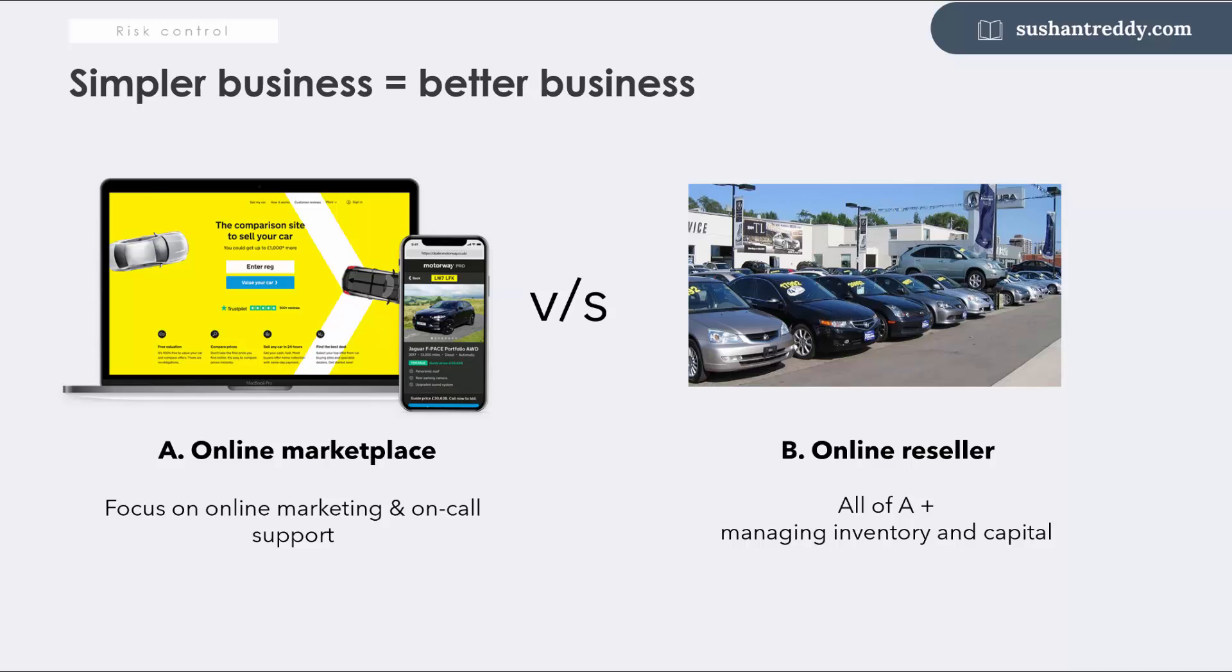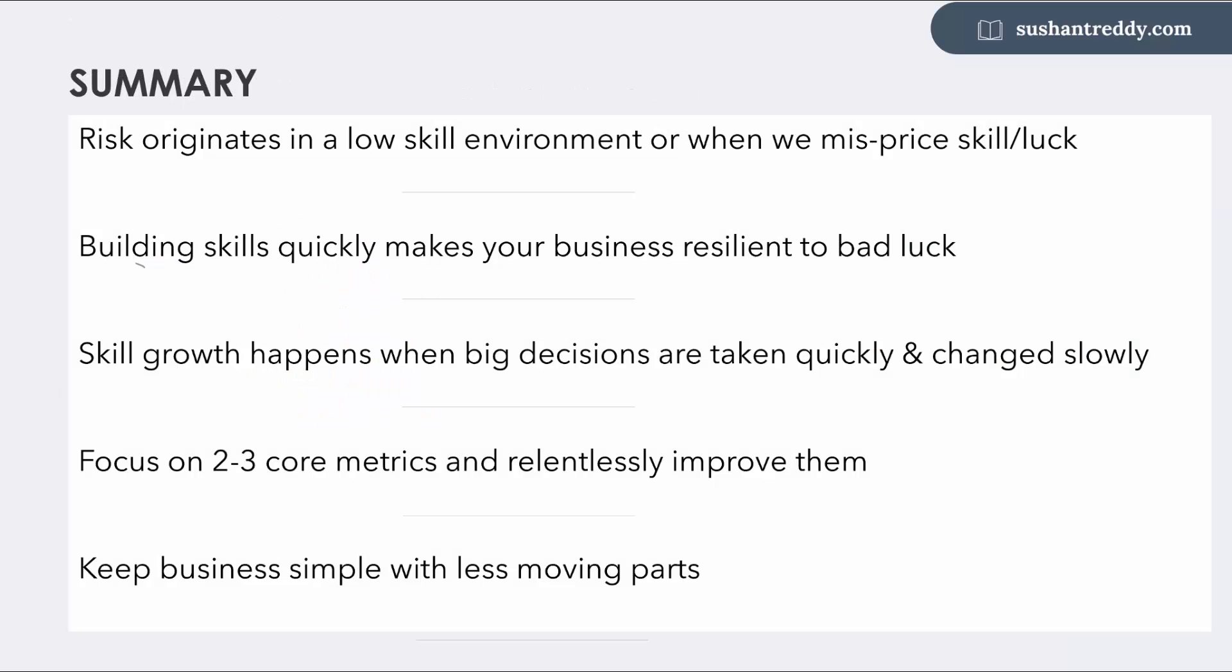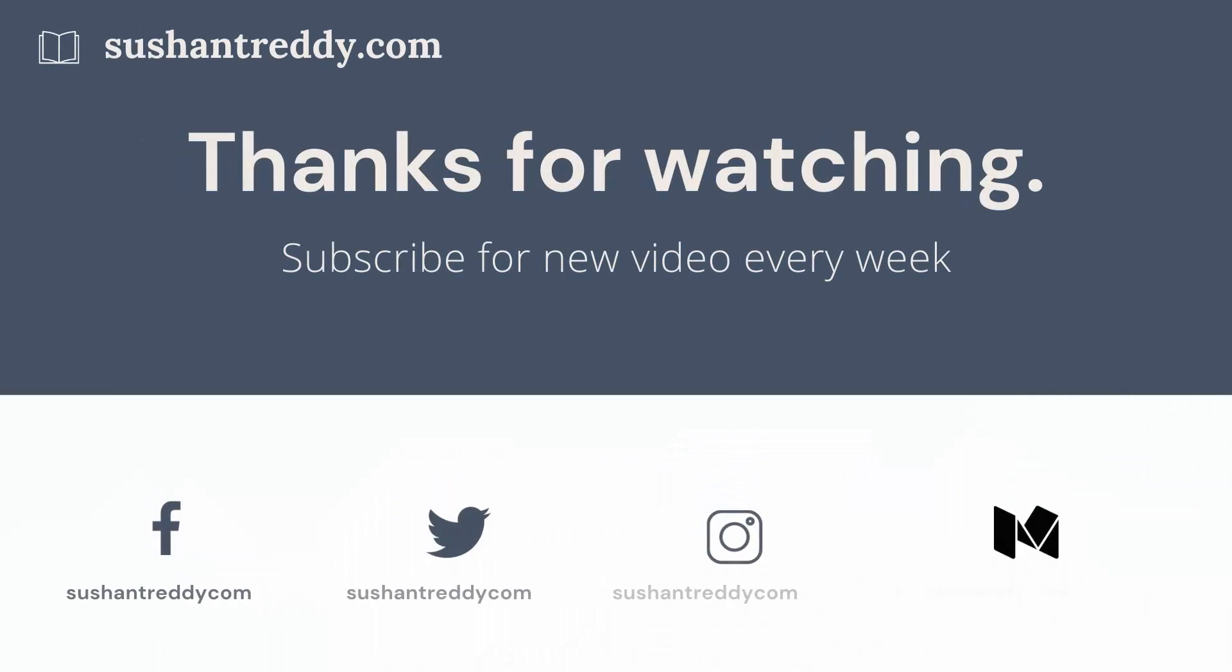To summarize, building skills quickly make your business resilient to bad luck. Skill growth happens faster when you take decisions quickly and change decisions slowly, identify the two to three core metrics that you relentlessly improve, and start with simple business with fewer moving parts. Thanks for watching. For weekly videos you can subscribe to my channel or to my newsletter on sushantready.com. Until next time, stay safe and goodbye.